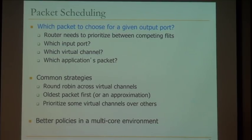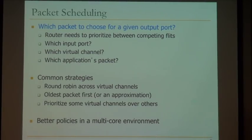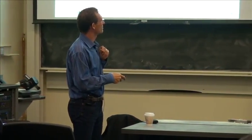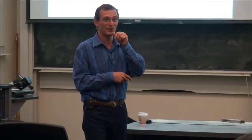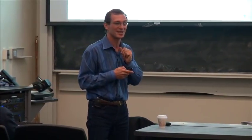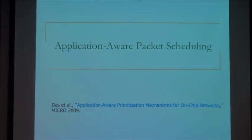Existing application-unaware policies like round-robin and age-based scheduling have two main problems. First, they treat all application packets equally, but an application with only one packet would make faster progress if prioritized. Second — more importantly in a network-on-chip context — the policy is local to each router, so one router may prioritize an application while another deprioritizes it, yielding inconsistent end-to-end prioritization. Application-aware global scheduling policies solve both problems.